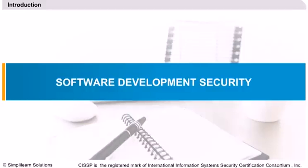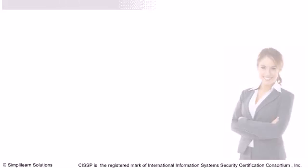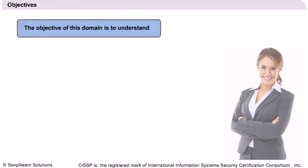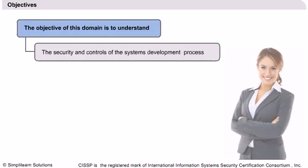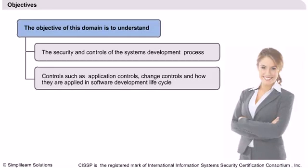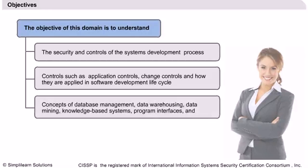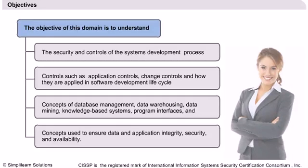As well as discussing the proper and secure means of designing and controlling applications, we also review maliciously created software, or malware. According to the ISC-2 Candidate Information Bulletin, a CISSP candidate is expected to understand the security and controls of the system's development process, system lifecycle, application controls, change controls, data warehousing, data mining, knowledge-based systems, program interfaces, and concepts used to ensure data and application integrity, security, and availability.